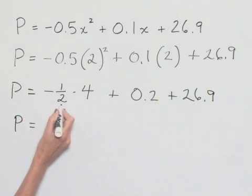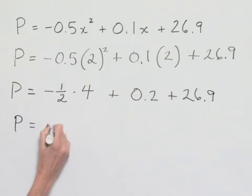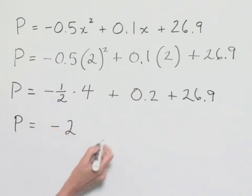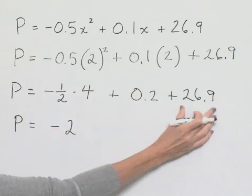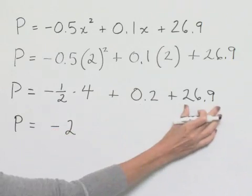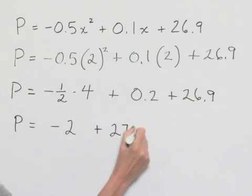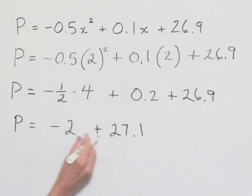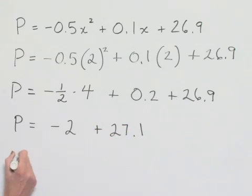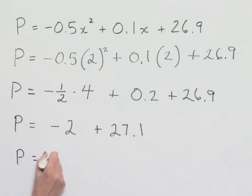Let's go ahead and do the multiplication. Negative 1 half times 4 is going to give us a value of negative 2. We can go ahead and add our decimal representations here. We have 2 tenths plus 26 and 9 tenths. That's going to give us a value of 27 and 1 tenth. And now subtracting 2 from 27 and 1 tenths gives us a value of P as 25 and 1 tenths.